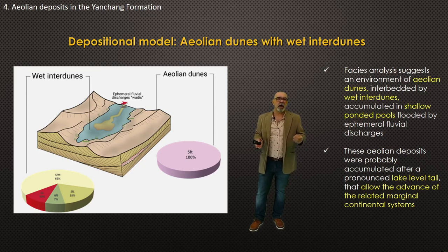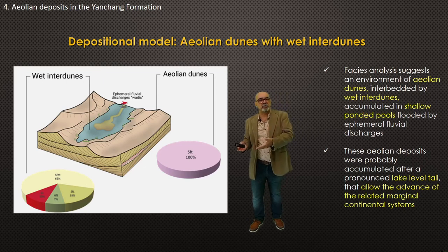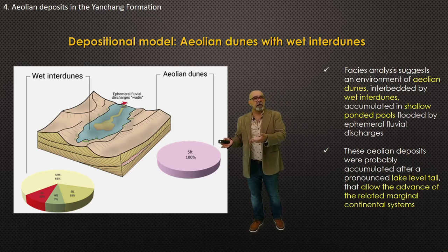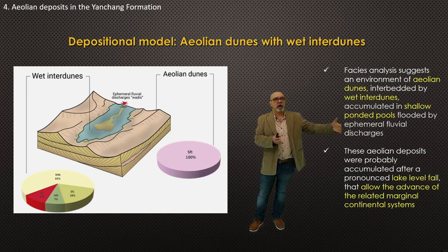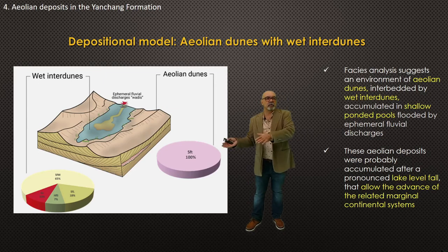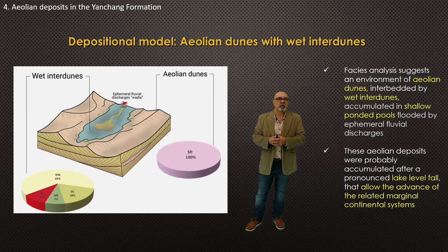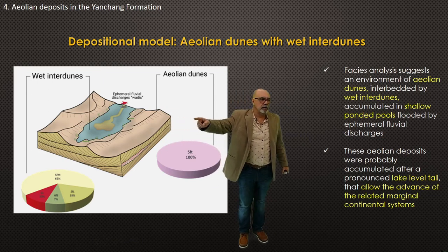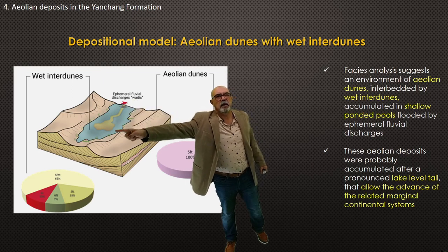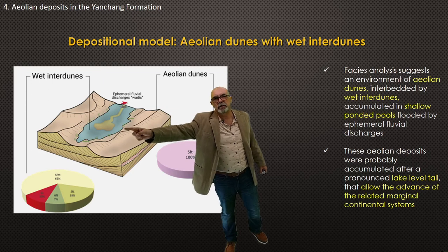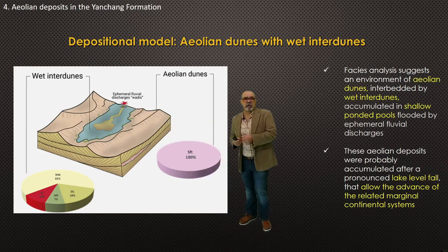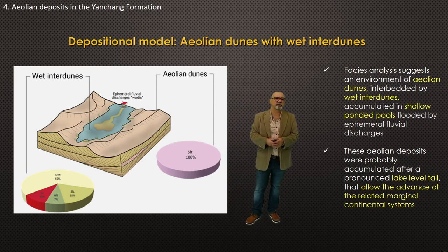These aeolian deposits are located within a regressive systems tract of depositional sequences during a period of low lake level. The aeolian deposits that occur at a marginal position of the Yanchang formation prograde into a more inner position because of this lake-level fall. In this cartoon, you can see aeolian dunes or grain-fall dunes surrounding wet inter-dunes with shallow pools or shallow lakes, with ephemeral fluvial currents entering these low wet areas.